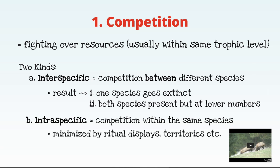Intraspecific competition is behaviorally more interesting, because generally you don't want to kill off other members of your own species. Over evolutionary time, different groups have developed ritualized displays or territories to minimize actual fighting. Wolf territories are an example — two packs scent-mark the edges of their territories and maybe once every year or two actually fight over them, but otherwise respect those scent boundaries. Ritual displays where males show strength through large antlers or bellowing let females choose mates without actual fighting.